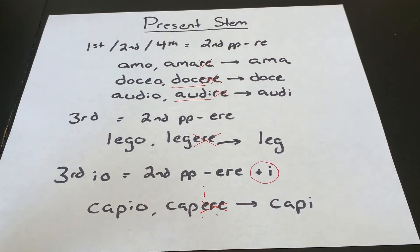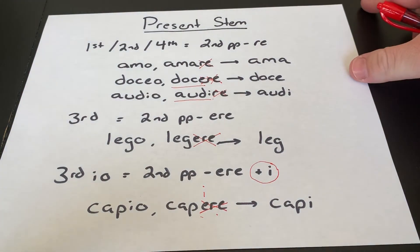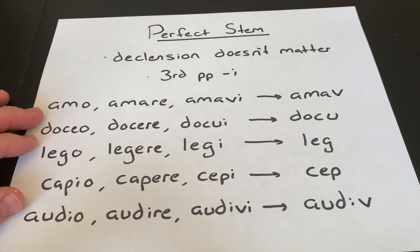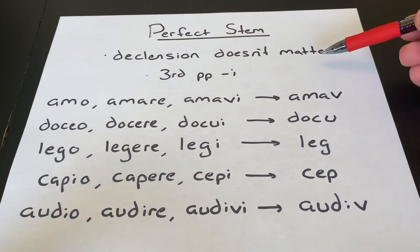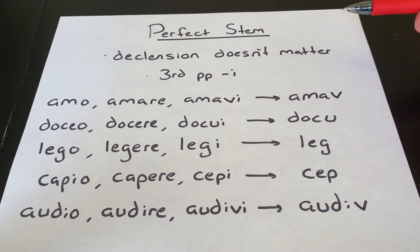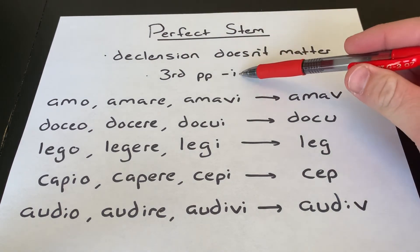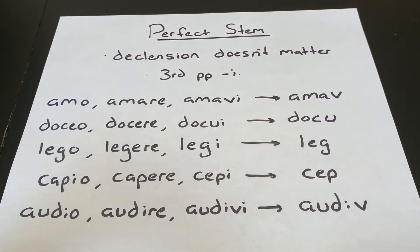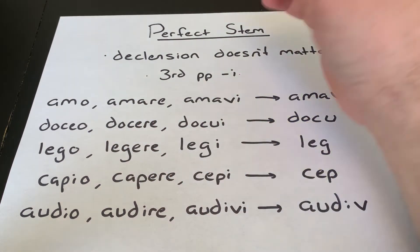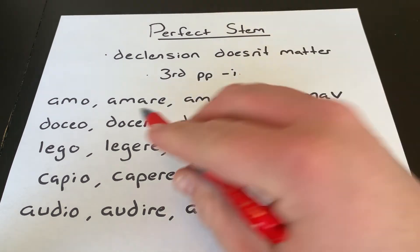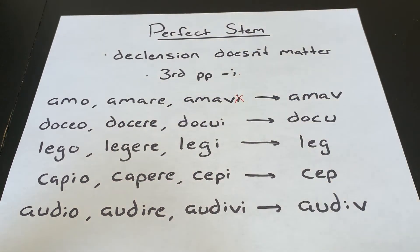The perfect stem is the other stem we're going to be using, and it's much easier because the conjugation doesn't matter — it doesn't even matter if it's an irregular verb. The perfect stem is always the third principal part minus the I. So for amo, amare, amavi — we go to the third principal part, take off the I, and our stem is amav.